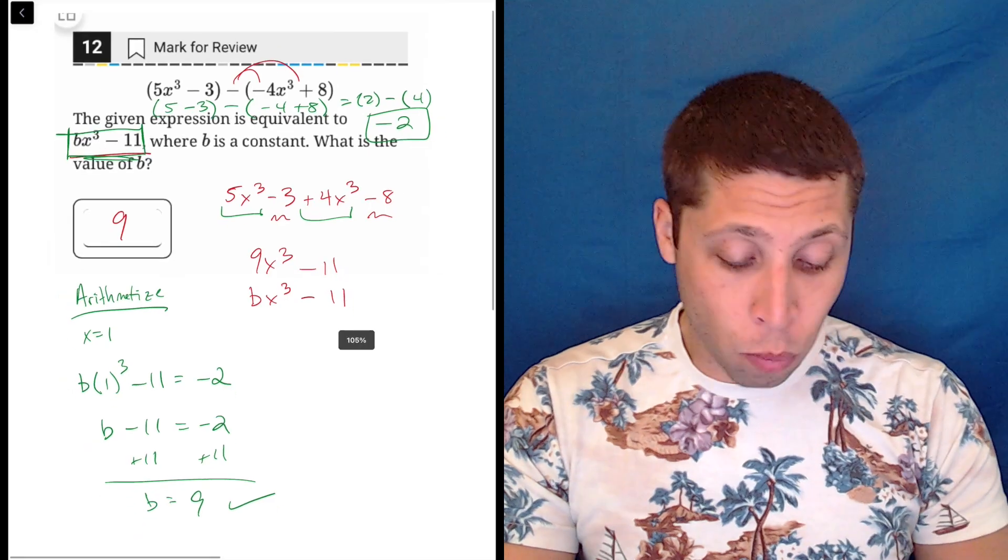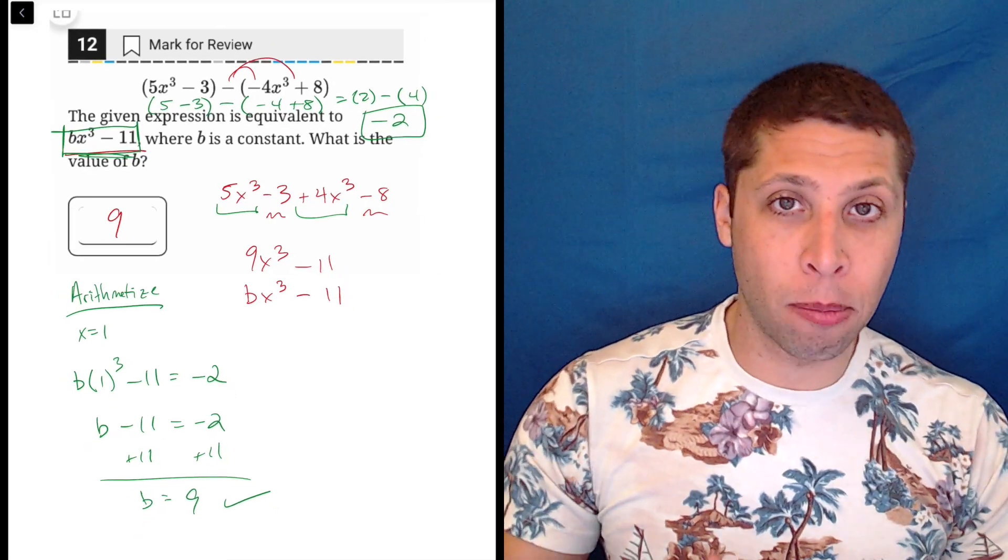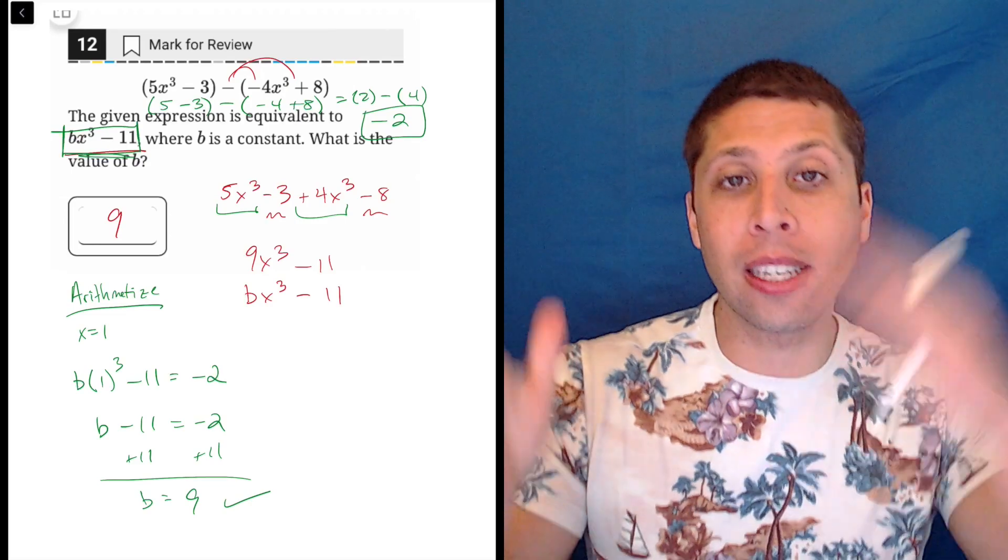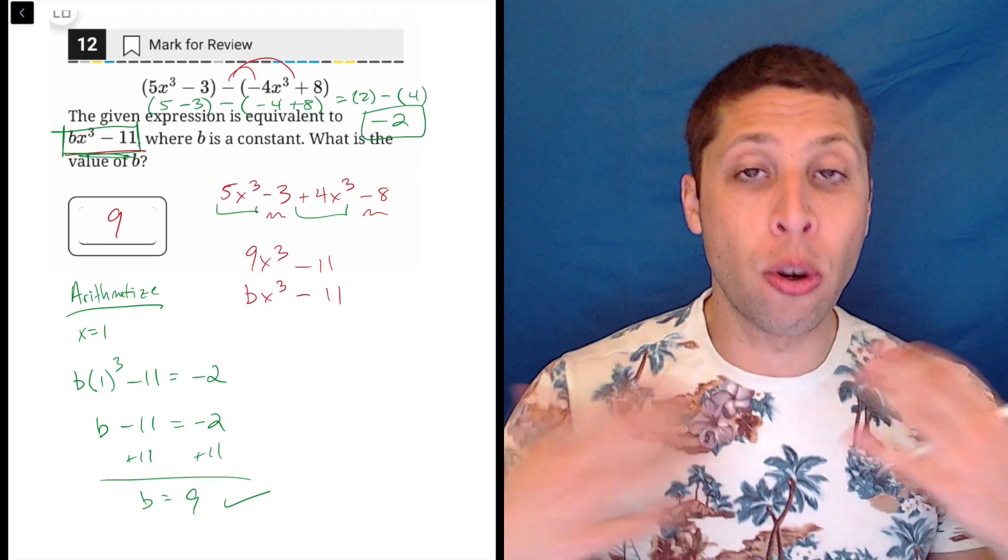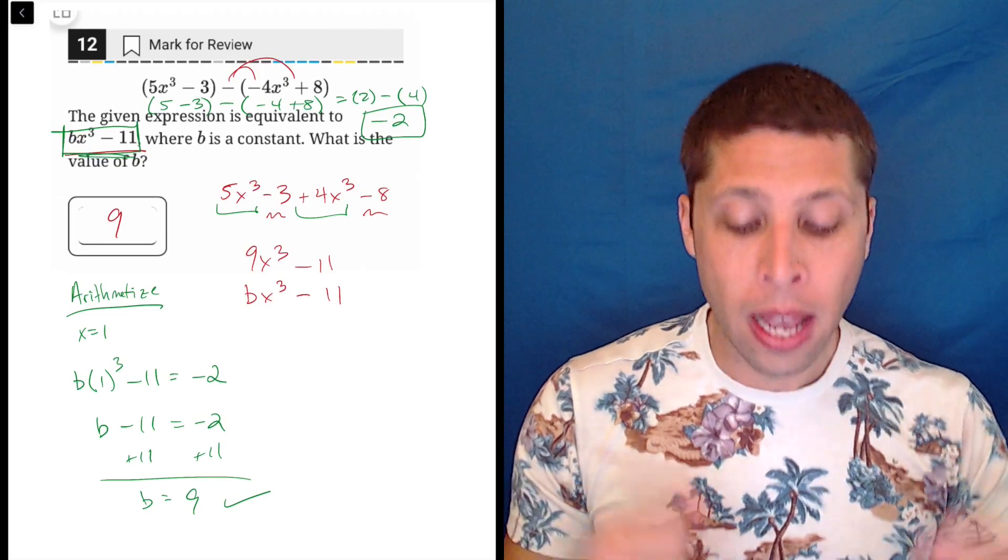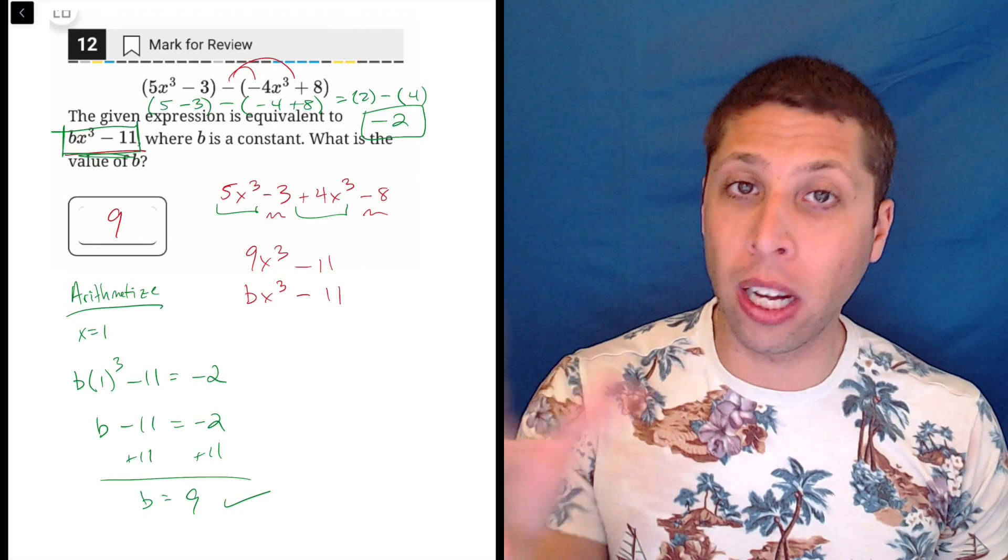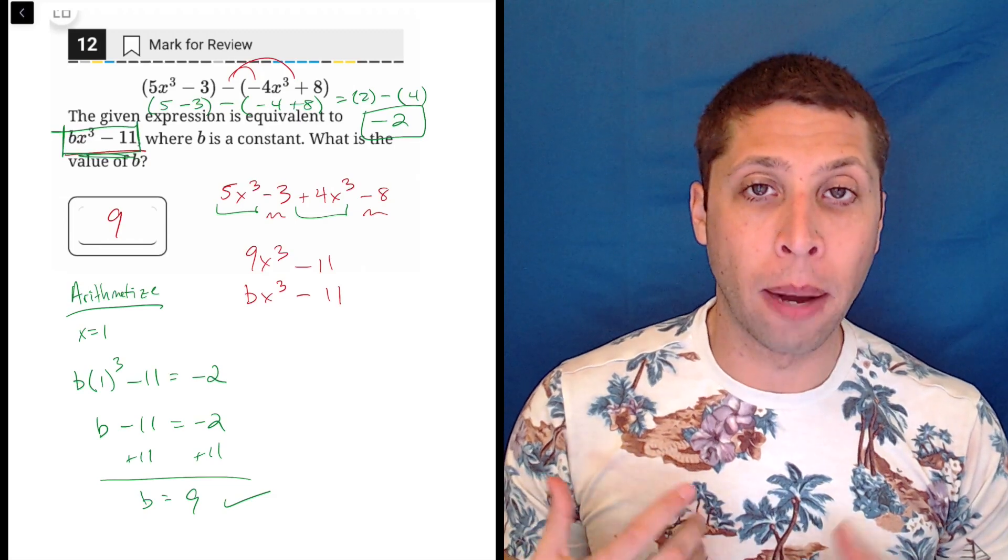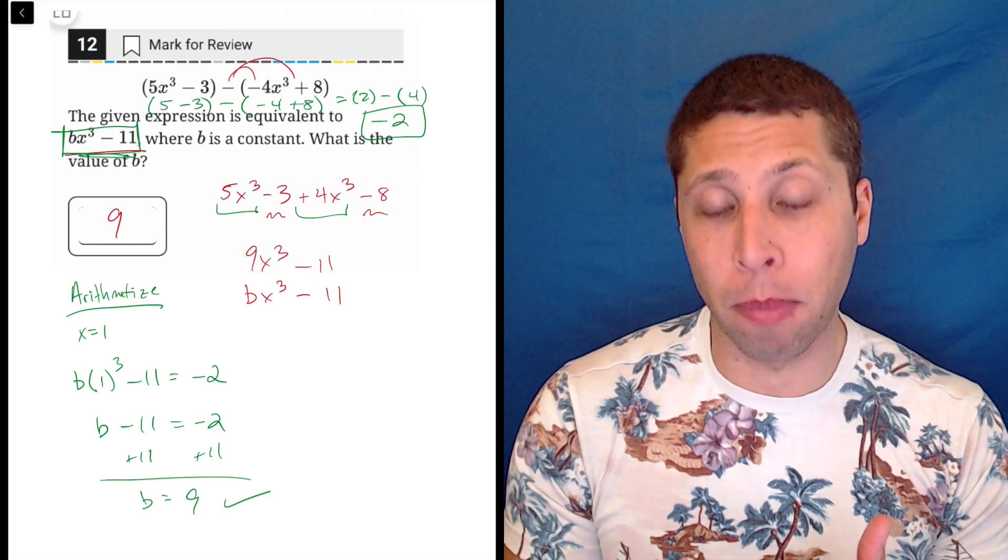Like I said, though, this won't always work because a lot of times when they do this style of question, there are more components. And we need to keep the components separate in order to understand how they interact with each other. In this case, there's really only one kind of unknown piece, the bx cubed.